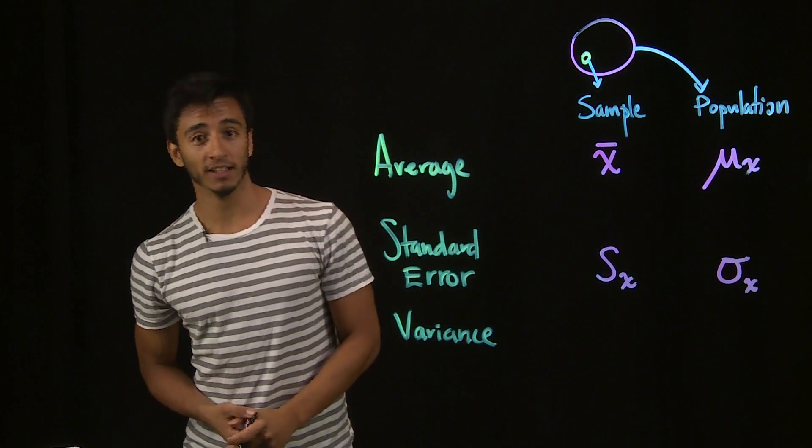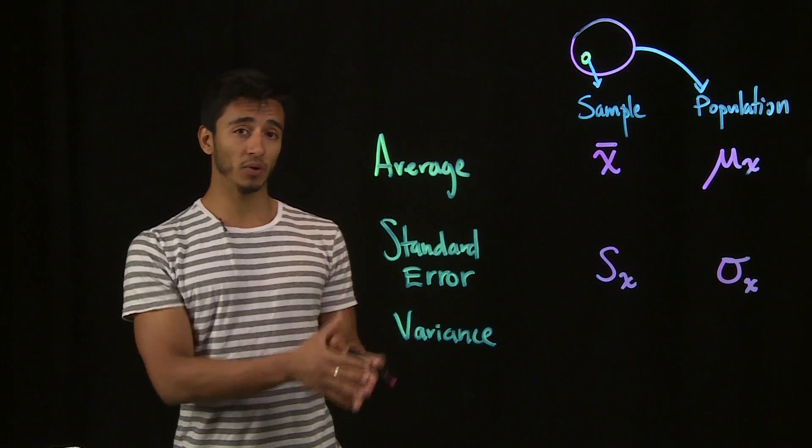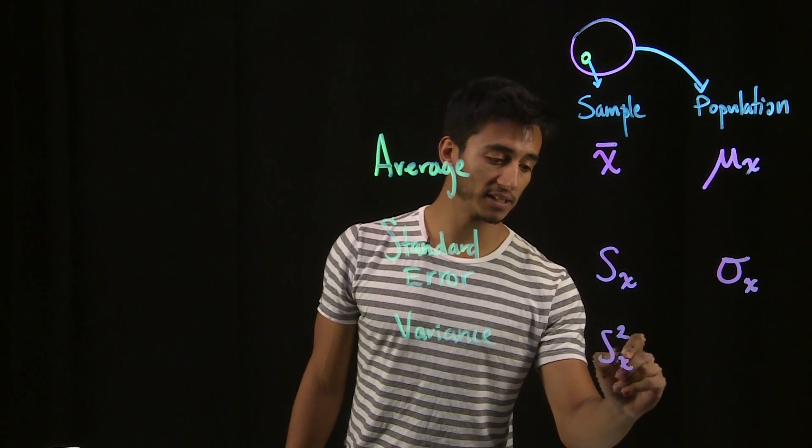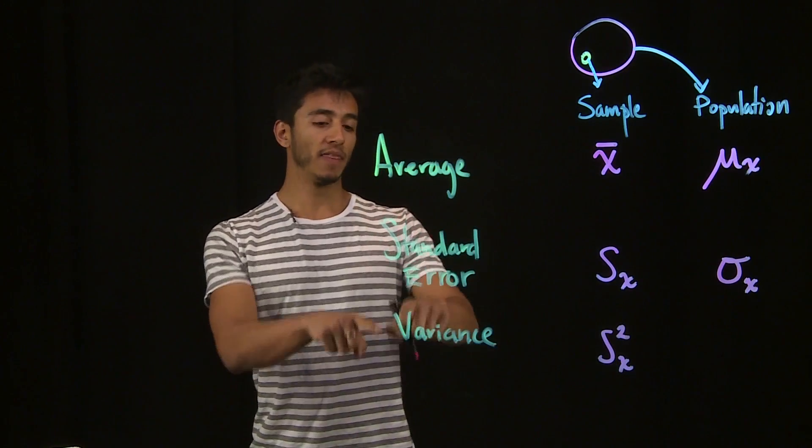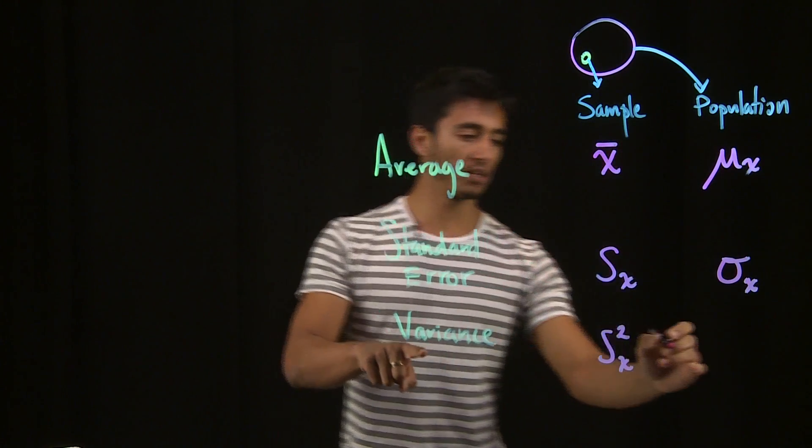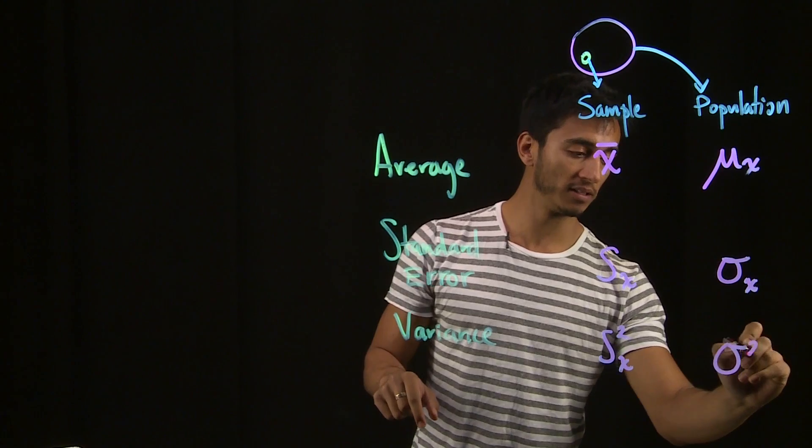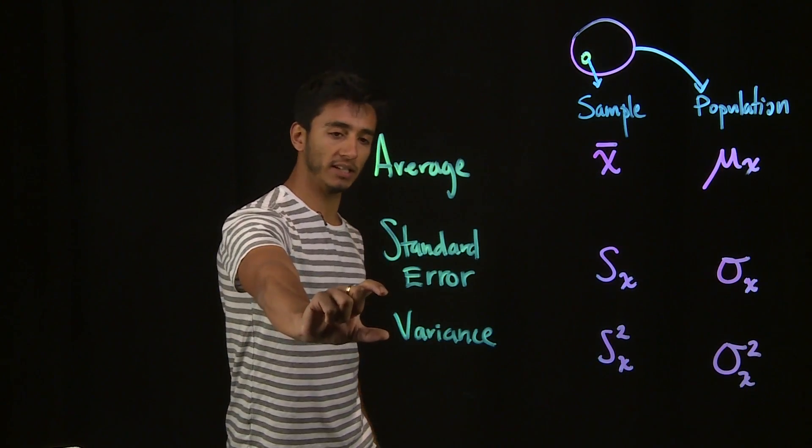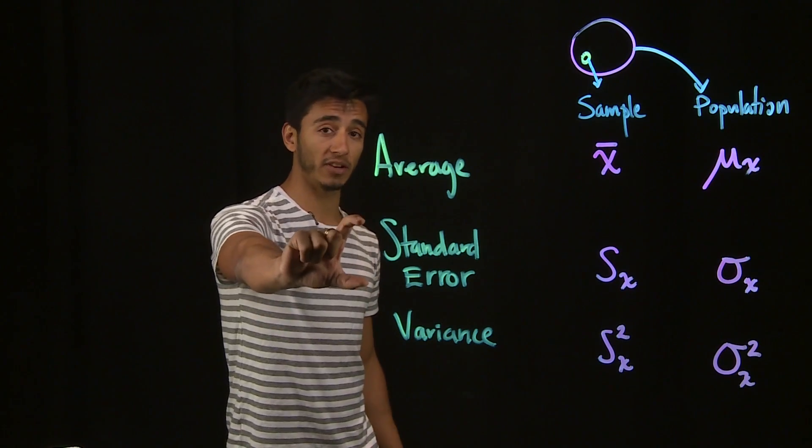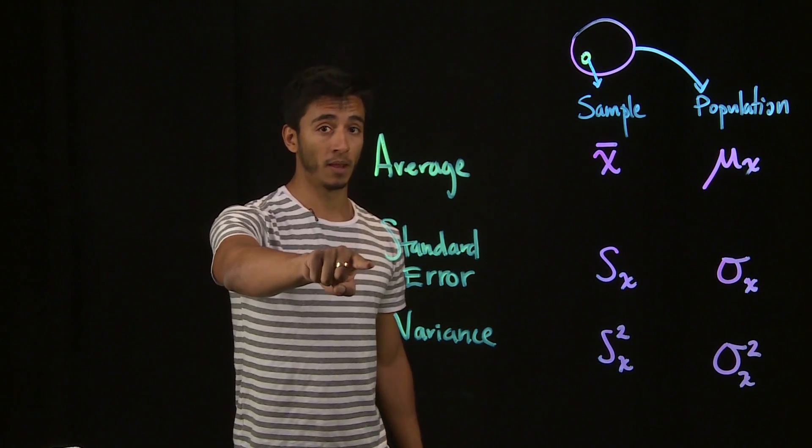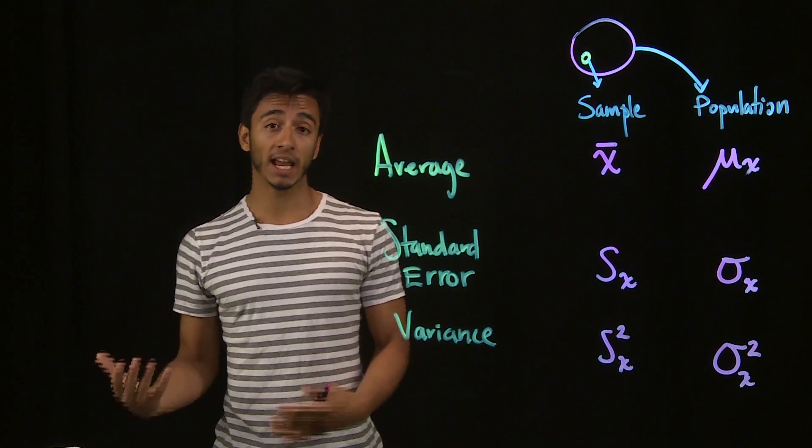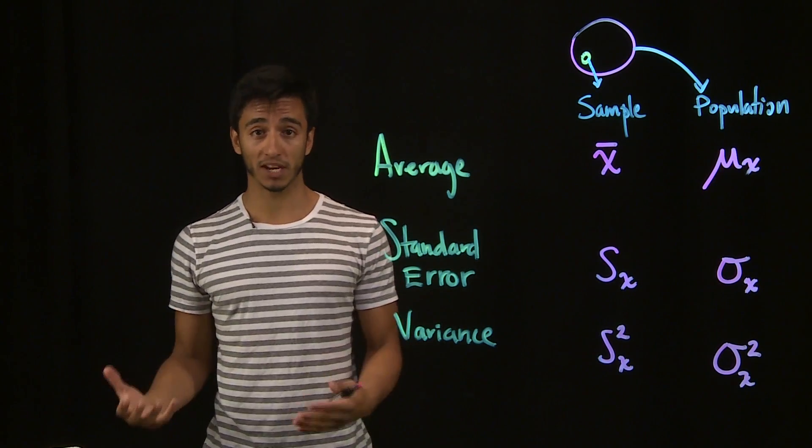Finally, the variance of a sample is s of x squared and the variance of a population is sigma squared of x. Notice that the variance is simply the standard error squared, but we care to make this distinction because it comes in handy when you're dealing with computations.